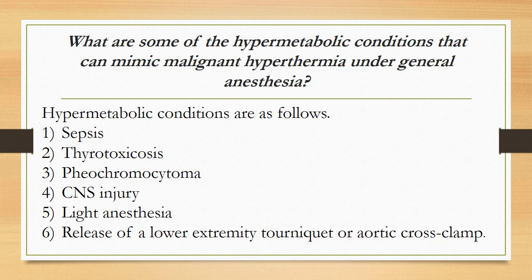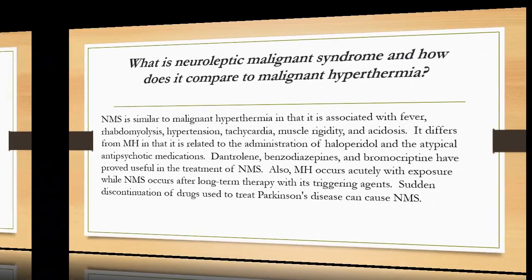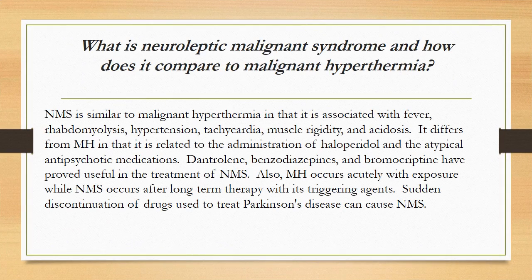What are some of the hypermetabolic conditions that can mimic malignant hyperthermia under general anesthesia? Hypermetabolic conditions include: 1) sepsis, 2) thyrotoxicosis, 3) pheochromocytoma, 4) CNS injury, 5) light anesthesia, and 6) release of a lower extremity tourniquet or aortic cross-clamp.